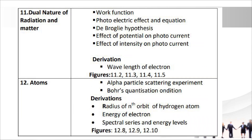Chapter 11: Dual Nature of Radiation and Matter. Topics: work function, photoelectric effect and equation, de Broglie hypothesis, effect of potential on photocurrent, effect of intensity on photocurrent. Derivation: wavelength of electron. Important figures: 11.2, 11.3, 11.4, and 11.5.